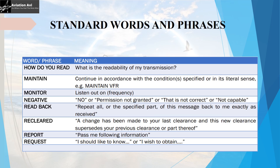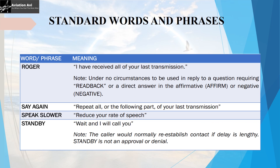'Request' is used when the transmitting station wants to obtain particular information from the receiving station. 'Roger' means 'I have received your last transmission' and under no circumstances can it be used as a reply requiring a read back or a direct answer like affirm or negative. 'Say again' is used when the transmitting station wants the receiving station to repeat part or all of a message. 'Speak slower' is used to indicate that the receiving station should reduce its rate of speech.